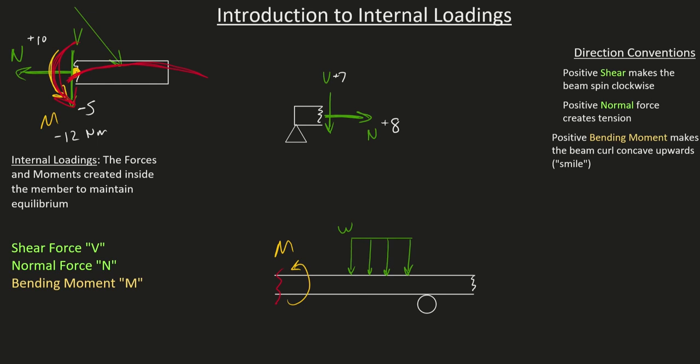So, if we calculated our bending moment to be like this, well, that really wants to make this beam smile. It wants to bring that right hand side upwards. So, if this was a 9 newton meter moment, I would say it's a positive 9 newton meter bending moment.